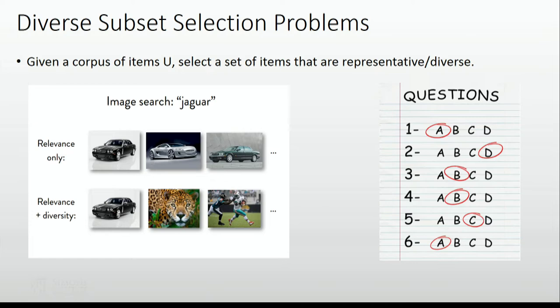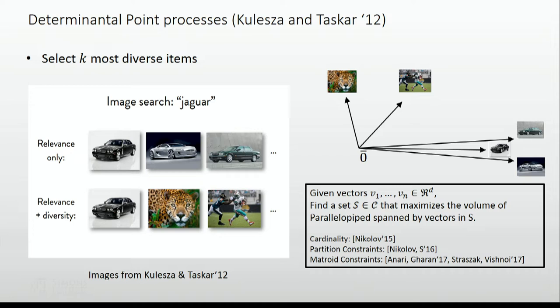One very nice model is using determinantal point processes. What you do is assign a vector to each of your objects — for example, an image — and this vector would be some kind of a feature vector, somewhat representative of the image in some high dimension R to the D. Then you say, I want to pick a set of images — vectors which are long, useful, have good features, but also are not pointing in the same direction. So I will try to pick the set of vectors which maximize the volume of the parallelepiped spanned by them. In some sense, I want them to be orthogonal as well as long.